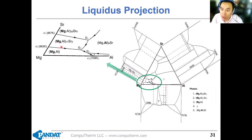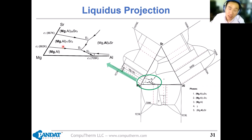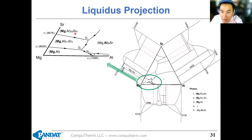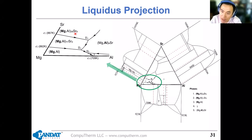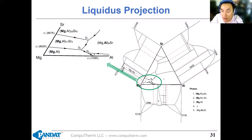You can see the monovariant line divides this diagram into several regions. Each different region represents the primary phase that will form during solidification. The arrow is added manually along the monovariant line to indicate the direction of decreasing temperature. We can also know this information based on the calculated isosolidus lines.